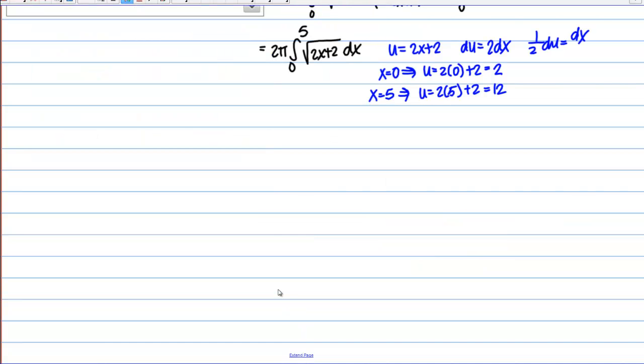So now I can rewrite my integral completely in terms of u. So I get the integral, 2 pi out front and then my new bounds are from 2 to 12. And I've got the square root of u which I'm going to write as u to the 1 half. And then dx was 1 half du. So I need this factor of 1 half in my du. So if I pull that 1 half out front, this is going to give me pi times the integral from 2 to 12 of u to the 1 half du.